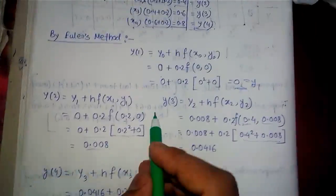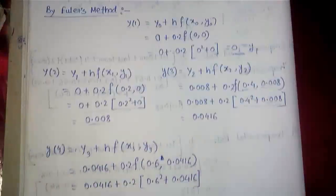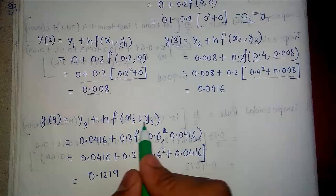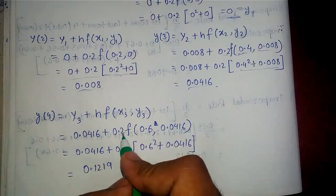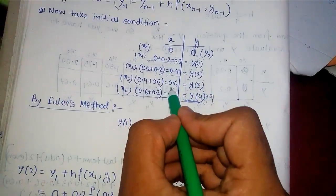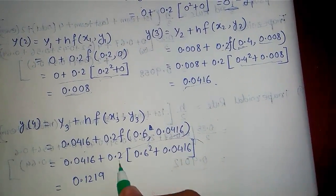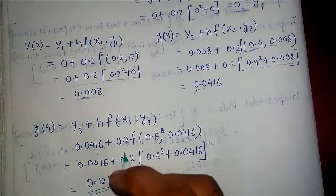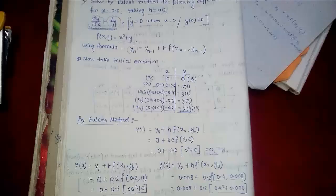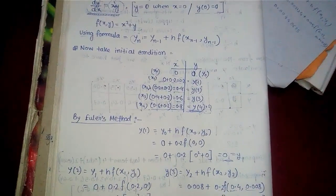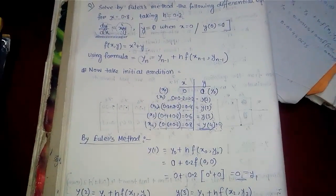Finally, our last step is y₄, since that is the value we are interested in. y₄ equals y₃ plus h times f(x₃, y₃). y₃ is from the previous calculation, h is as before, x₃ is 0.6, and y₃ is as computed. Substituting into the equation gives us the final answer. That's it for Euler's method. The next video will cover Euler's modified method, which is the modified version to decrease errors. Thank you.